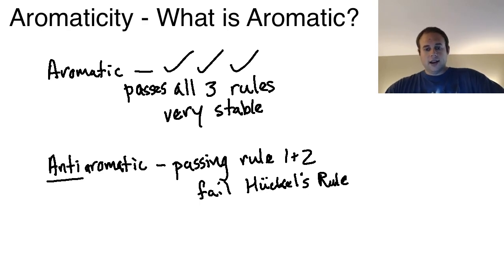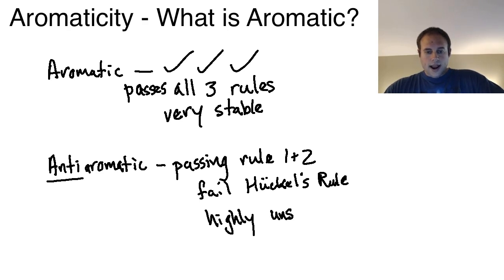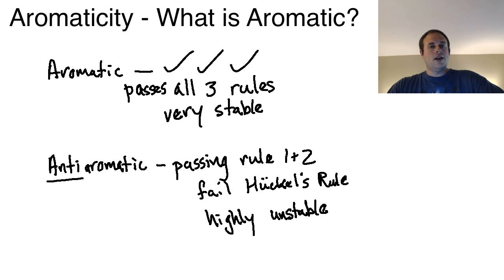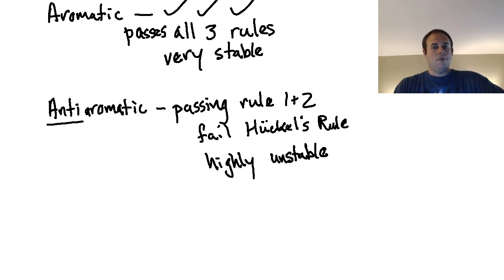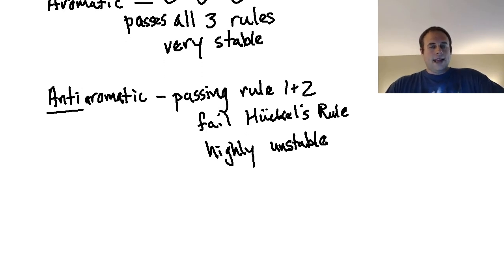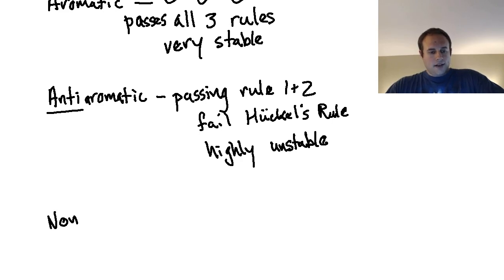Anti-aromatic compounds pass rules one and two — they are cyclic and fully conjugated — but they fail Hückel's rule. These are highly unstable compounds. In fact, many anti-aromatic compounds will attempt to rearrange themselves into a more stable form because of how unfavorable the anti-aromatic state is. They are very difficult to create in a lab due to the poor energy situation caused by filling anti-bonding orbitals with pi electrons.